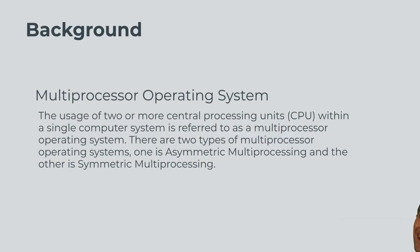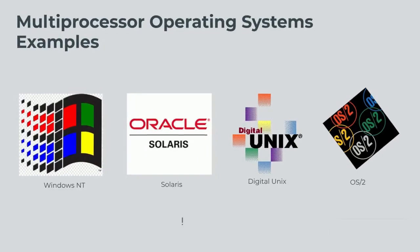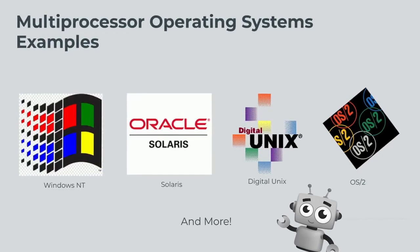There are two types of multi-processor operating systems: one is asymmetric multi-processing and the other is symmetric multi-processing. Here are some examples of a multi-processor operating system.